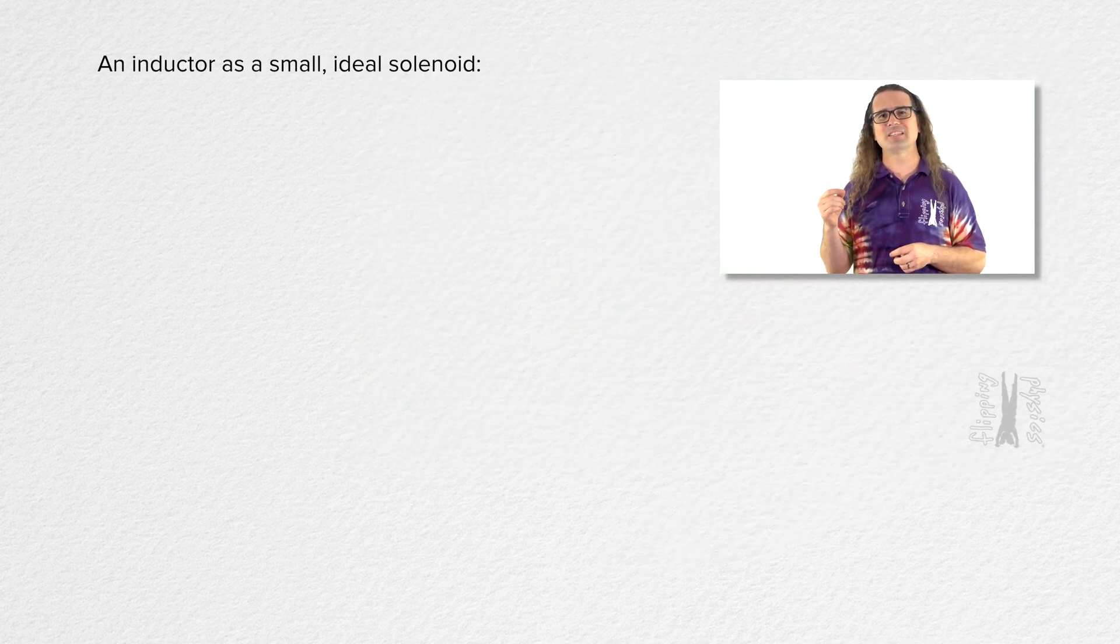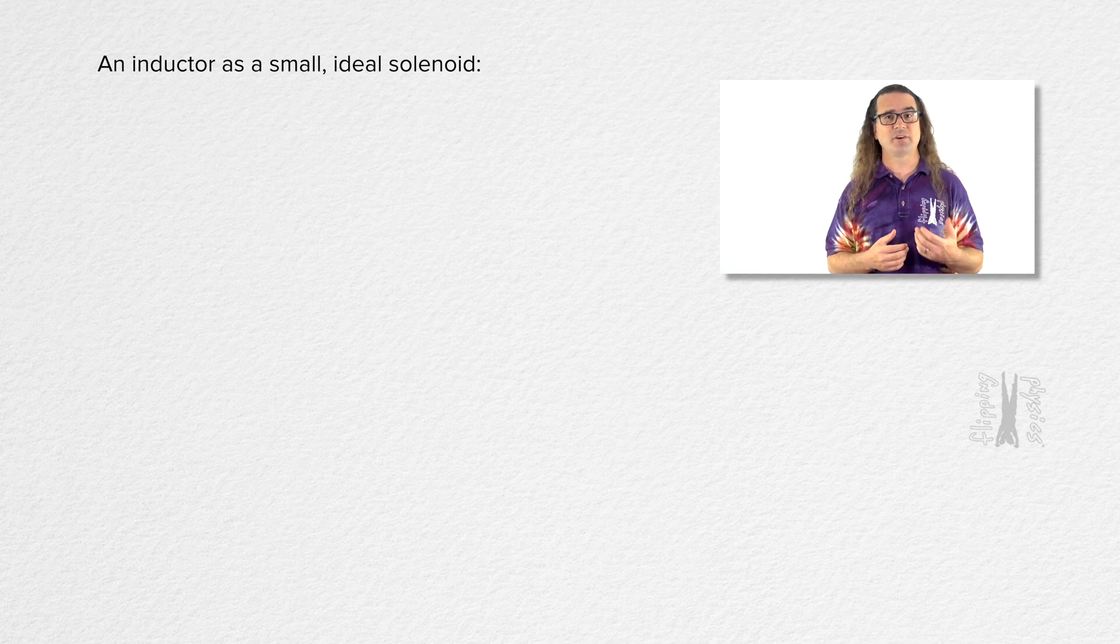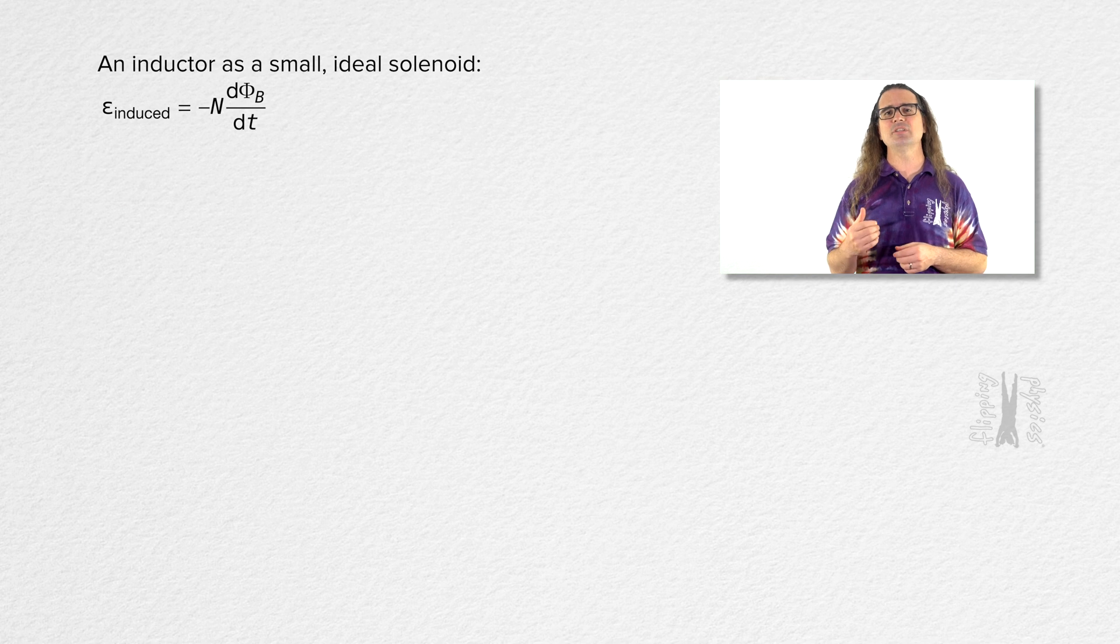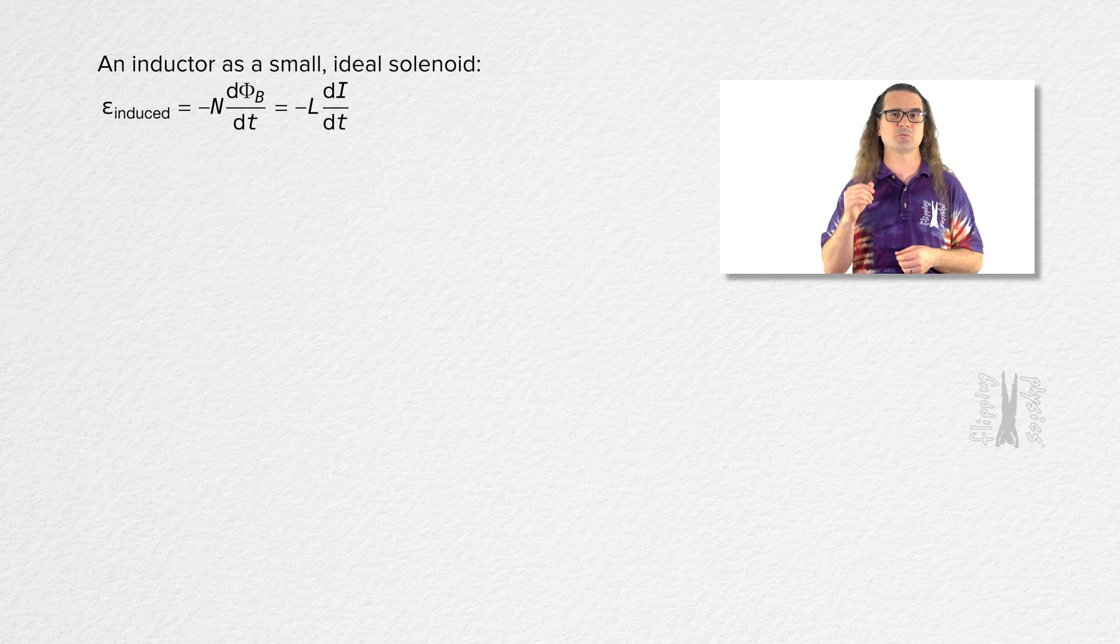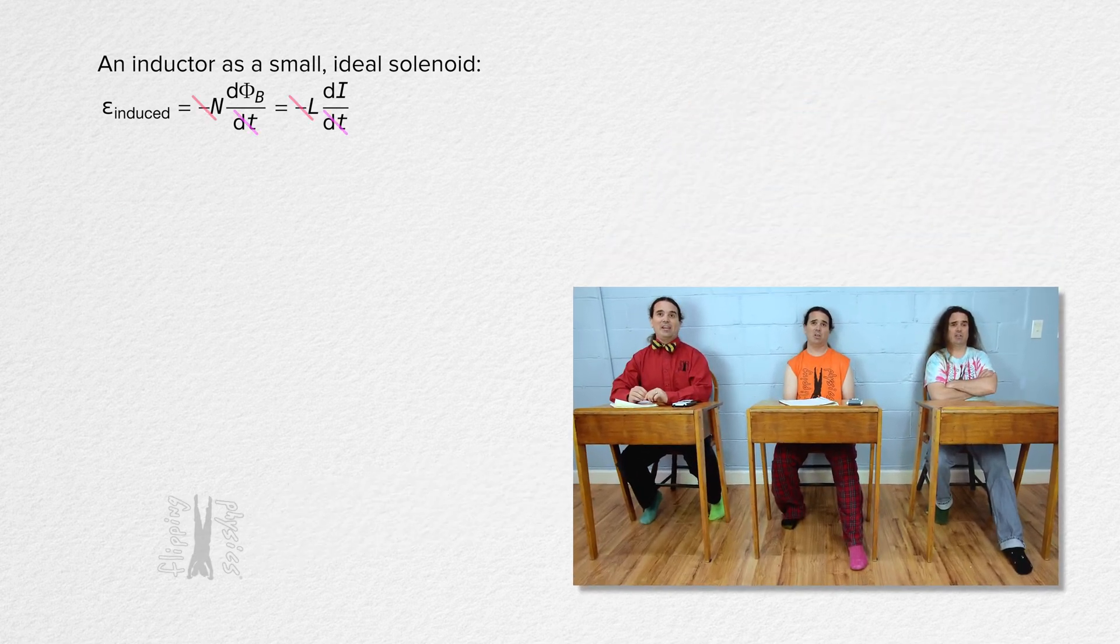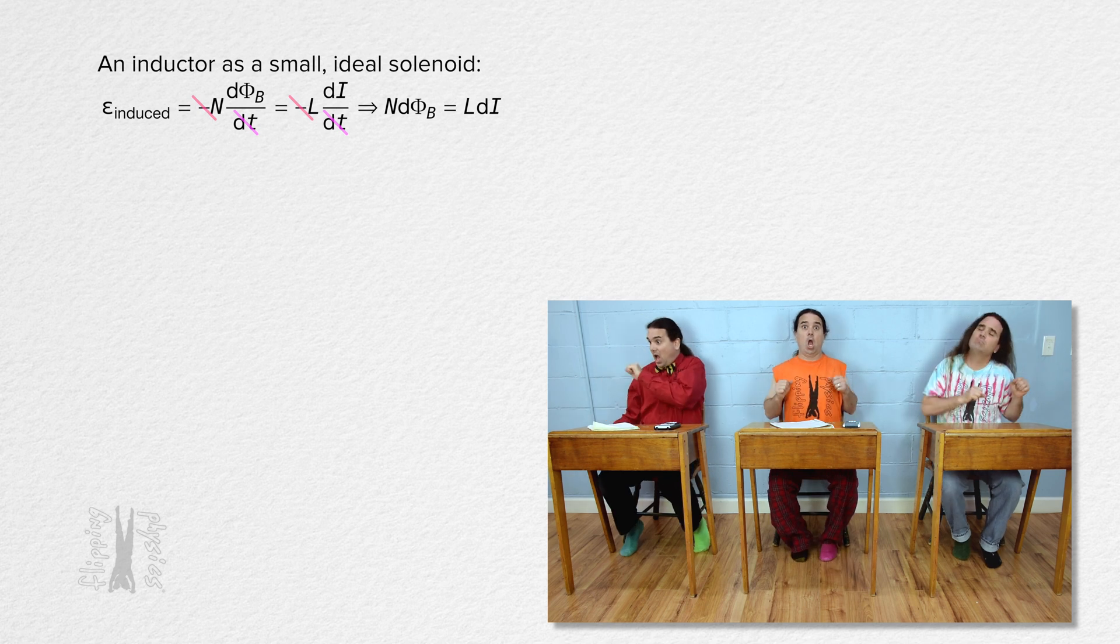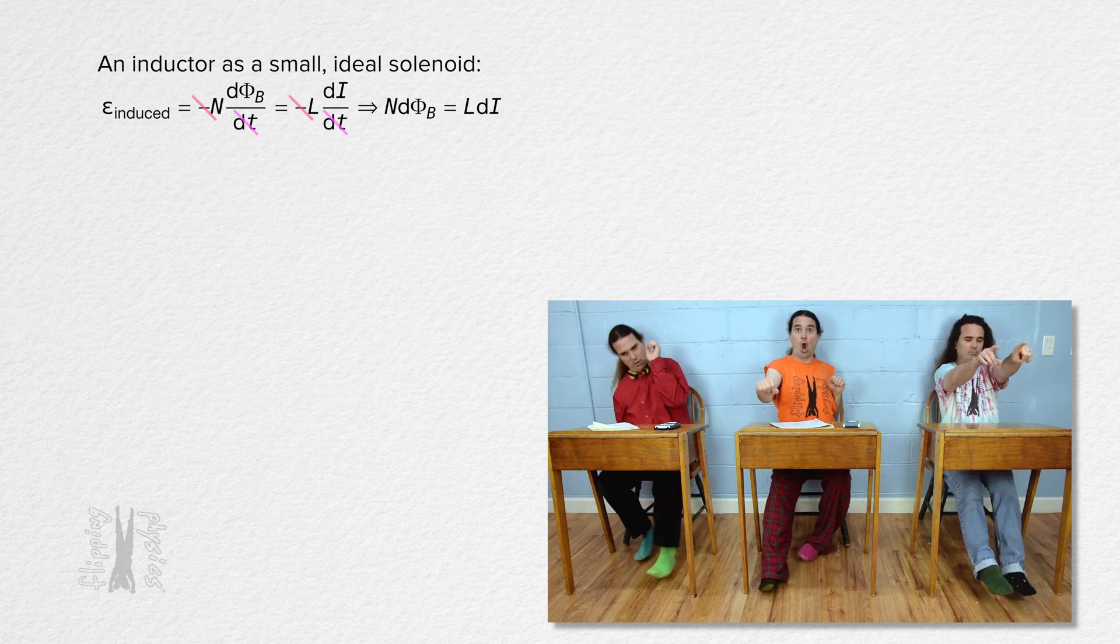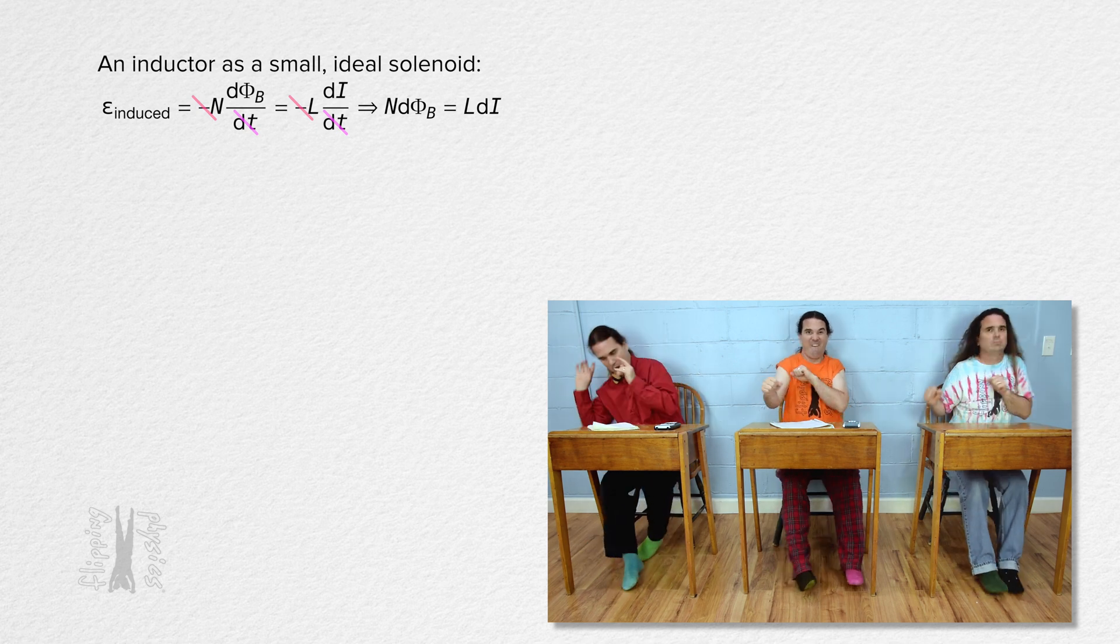We have two different equations for induced EMF. Faraday's law, which states that induced EMF equals the negative of the number of loops times the derivative of the magnetic flux through one loop with respect to time. And the induced EMF across an inductor equals the negative of inductance times the derivative of current with respect to time. Everybody brought negative 1 over dt to the party! Everybody brought mass!